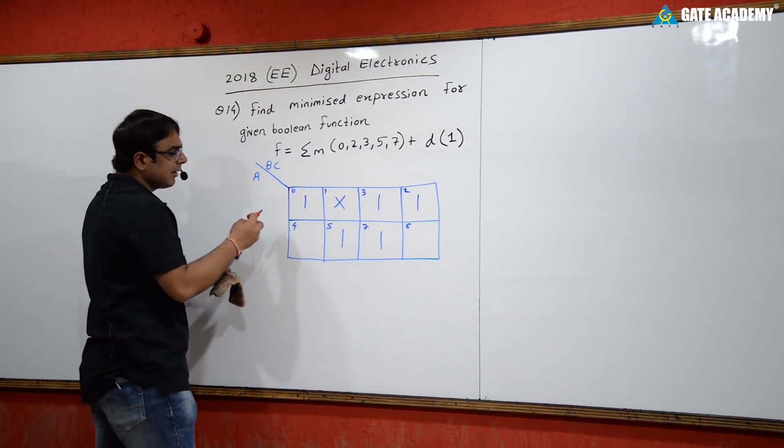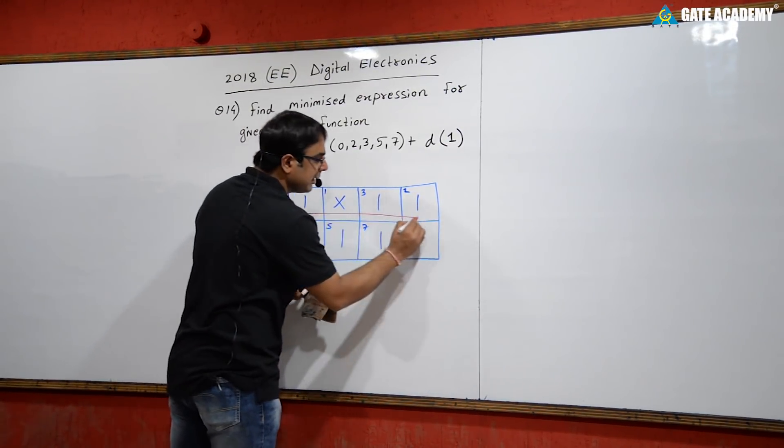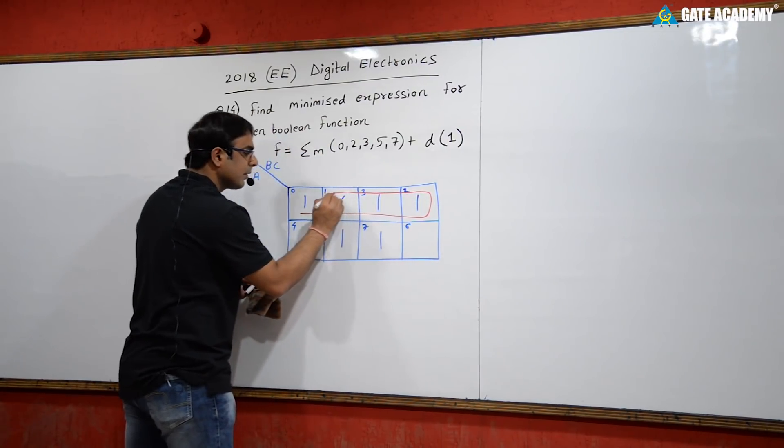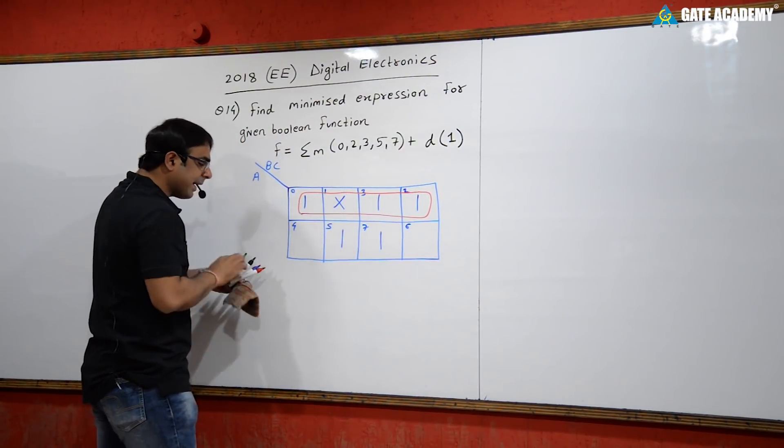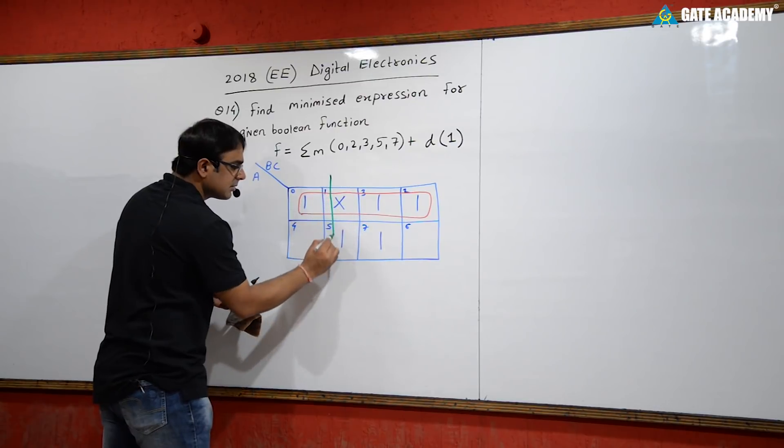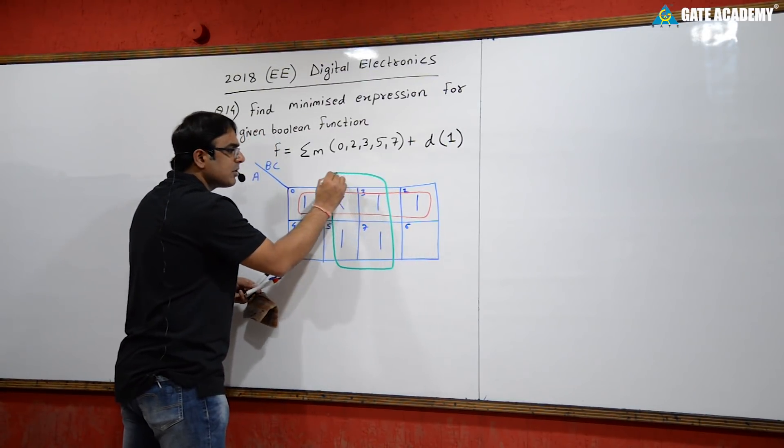The best possible grouping consists of one quad here and another quad here. This gives us the optimal grouping for this K-map.